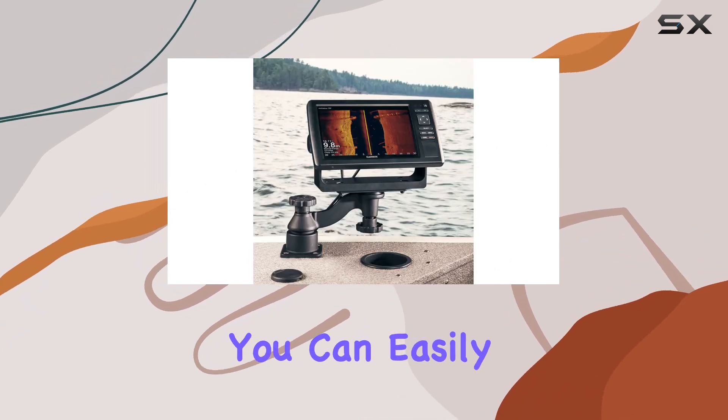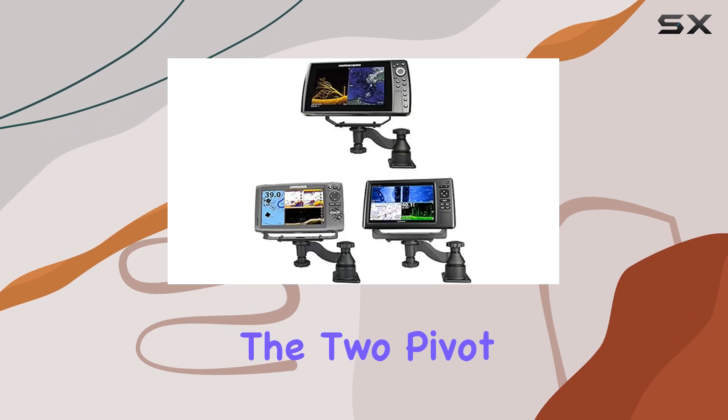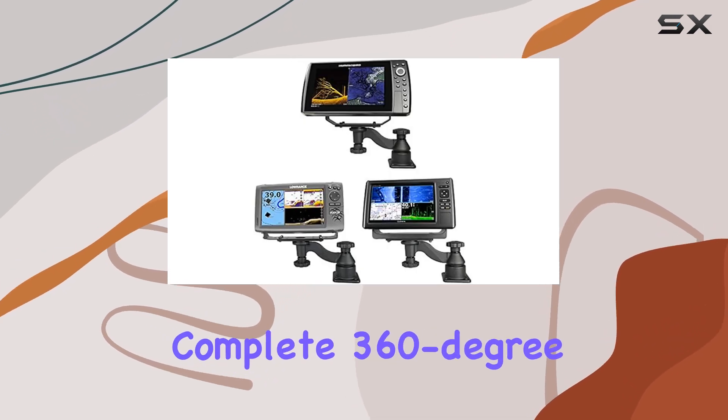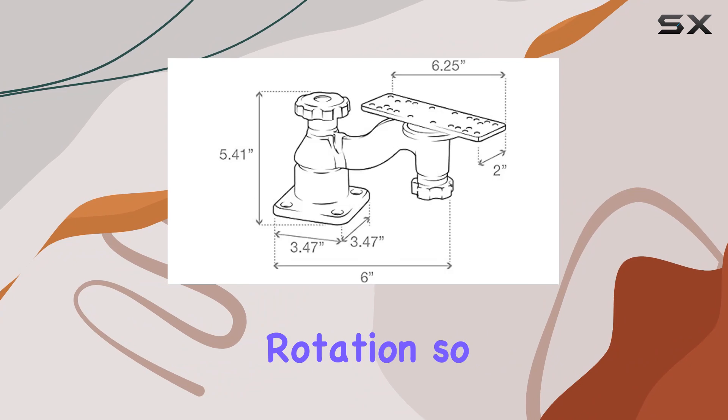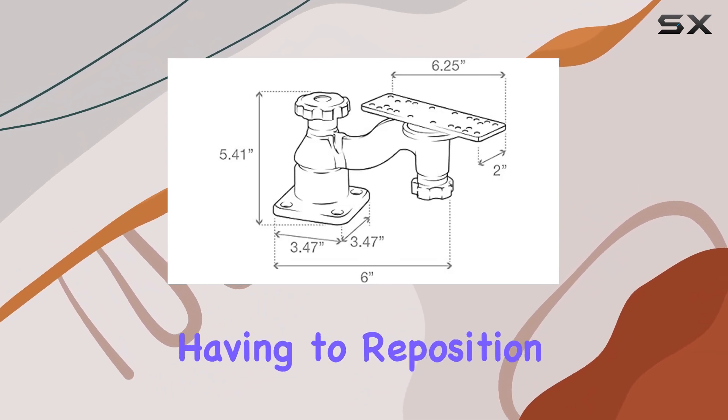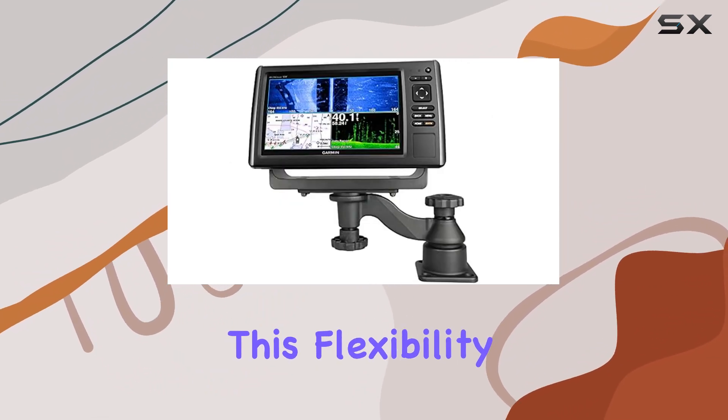You can easily adjust the arm to get the perfect viewing angle. The two pivot points offer complete 360 degree rotation, so you can quickly swivel your device without having to reposition the entire mount.